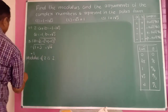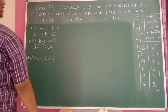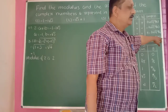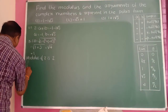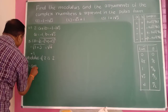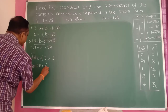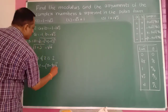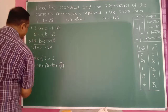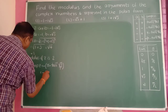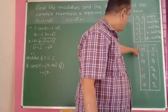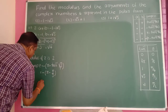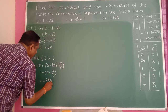Let us find the amplitude. So a is negative and b is also negative. If both are negative, then theta is equal to minus of pi minus tan inverse of |b/a|. So theta equals minus of pi minus tan inverse of √3/1. Now tan inverse of √3 is pi/3, so this becomes minus of pi minus pi/3, which equals minus 2π/3.